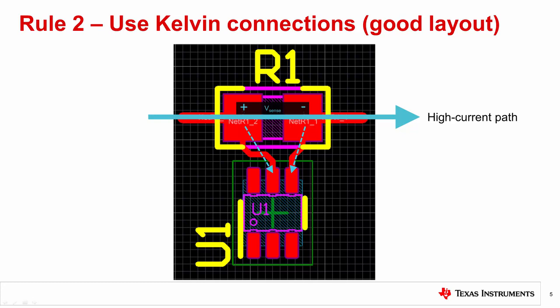In summary, these techniques force the bulk of the current through the shunt resistor and the value of the resistance seen by the current path will be close to the absolute value of the resistor. This enables the sense voltage, Vsense, to be accurately developed across our shunt and passed to the current sense amplifier.